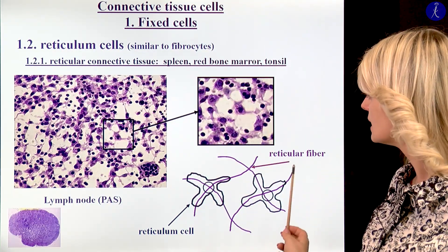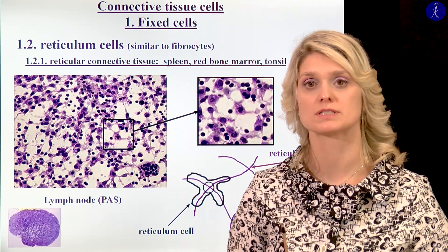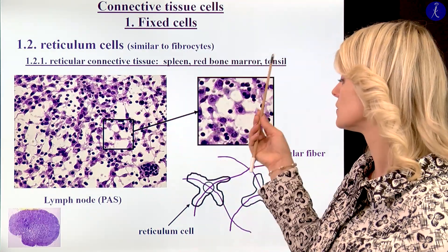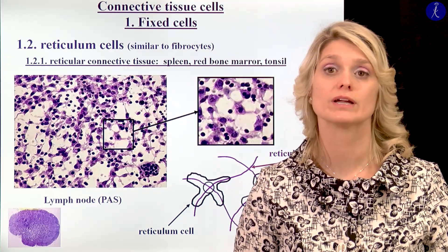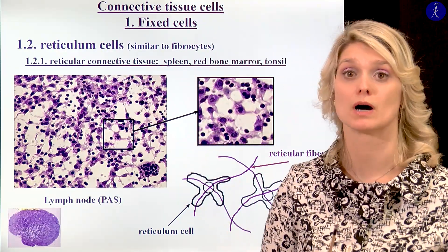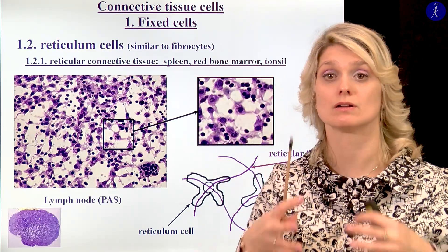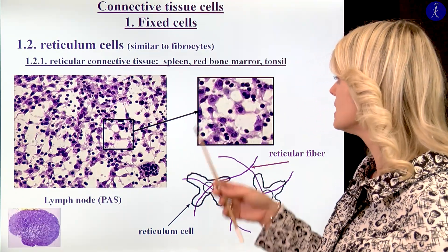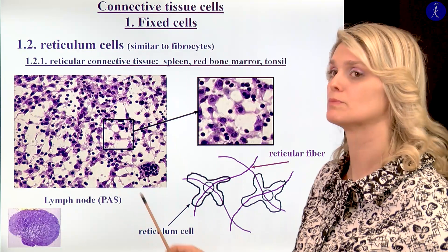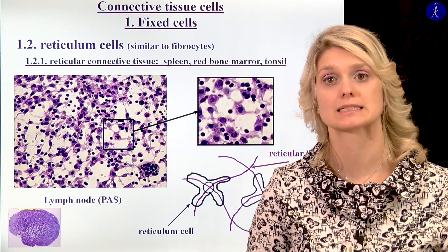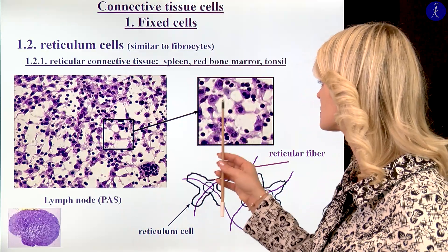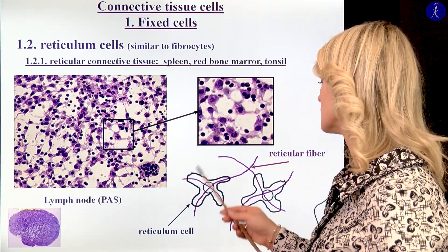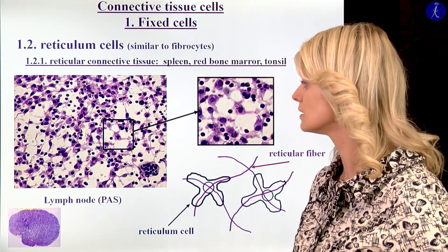This is a very special meshwork of some parenchymal organs — for example the lymphatic organs, the spleen, the tonsil, or the lymph node. Or we can find the same within the red bone marrow, where we have to keep together a lot of cells, for example the lymphocytes or the developing blood cells. The special staining of the reticular fibers uses the PAS method. With the PAS staining, we can see the reticular fibers which form this beautiful background meshwork of the organ.